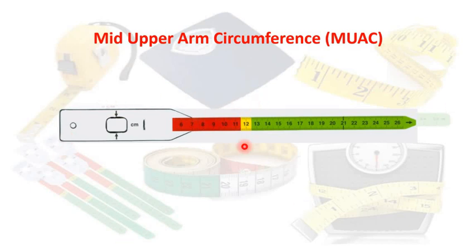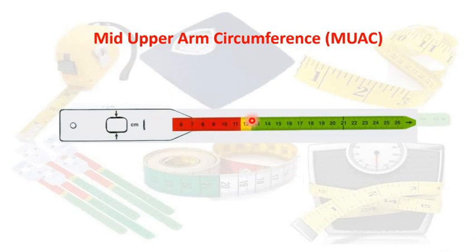This is a MUAC tape, and with little training everybody can use it. The tape shows color-coded cut-off points — yellow, red, and green — indicating levels of malnutrition. Red is for severe under-nutrition, yellow is for moderate under-nutrition, and green indicates at-risk or healthy state. The tape also indicates obesity or over-nutrition.